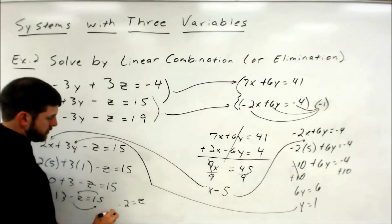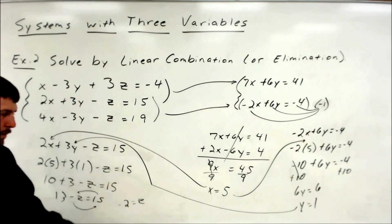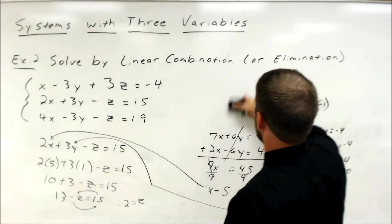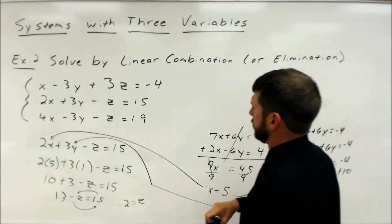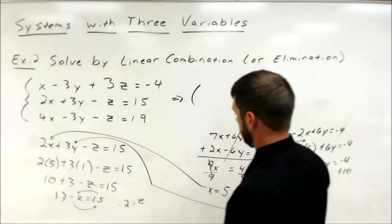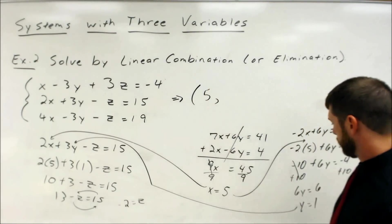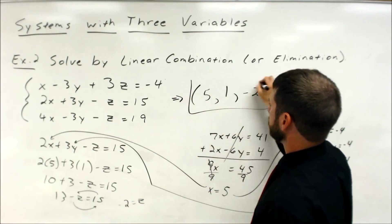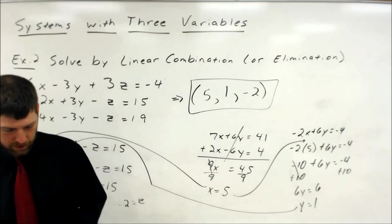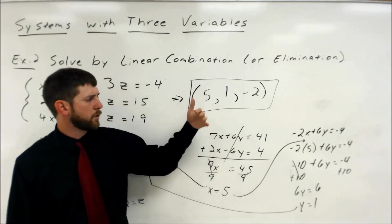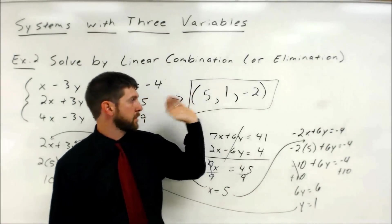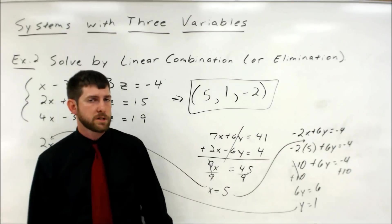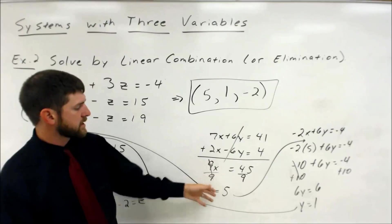Now remember, we write it as an ordered triple. So the solution set is x equals 5, y equals 1, z equals negative 2. Now if you have variables that weren't x, y, and z — say you have a, b, and c — you can write a equals, b equals, c equals, or define your ordered triple as (a, b, c). But any time we're working with x's, y's, and z's, let's get in the habit of writing our answers as ordered triples.